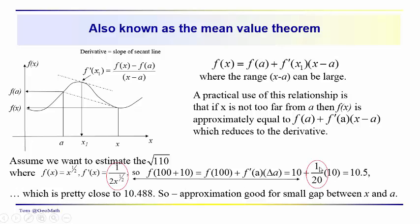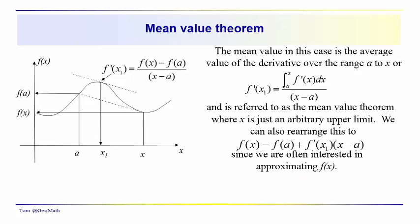So the approximation works quite well. Note that the delta x here is not an infinitesimally small dx — it's a significant distance from 100 — and it still gives a good approximation. The mean value in this case is just the average value of the derivative over the range a to x, and that is referred to as the mean value.